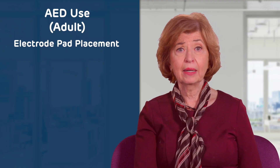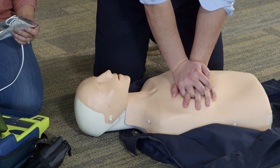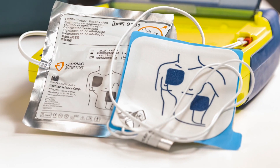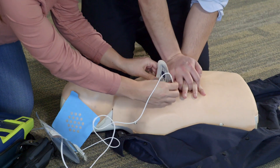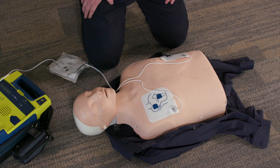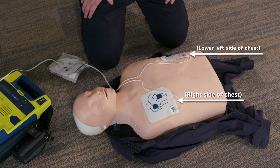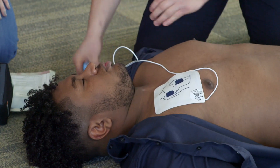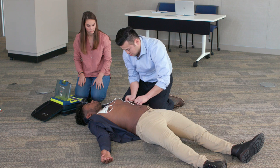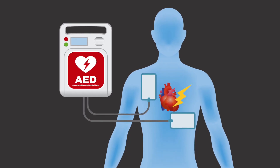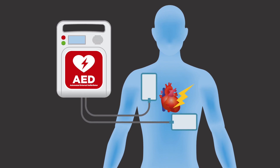Electrode Pad Placement: Open the electrode pads and place them on the victim's bare chest as shown on the pad pictures. One over the victim's right chest just below the collarbone, and the other on the left side of the victim's chest below the left nipple. Place one pad on bare upper chest, and peel the second pad and place on bare lower chest as shown. The position allows the shock to discharge across the heart.